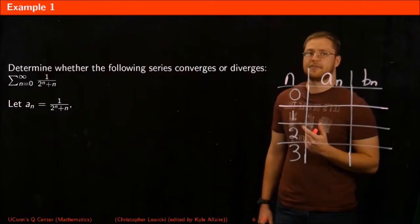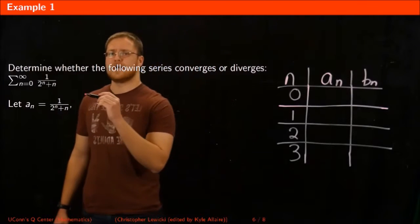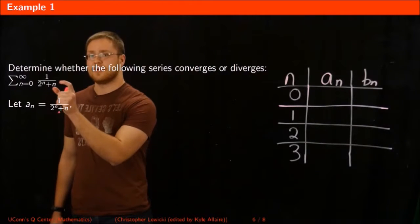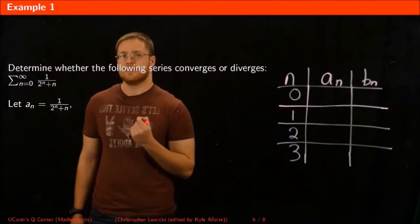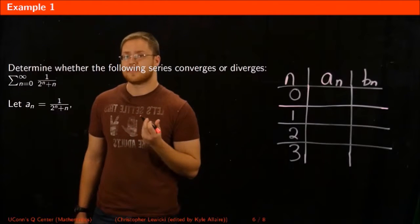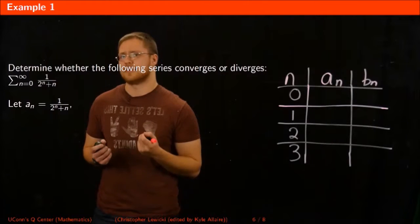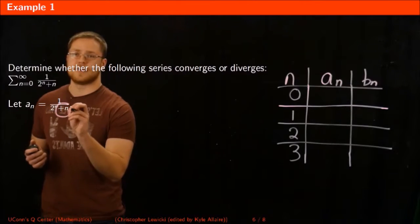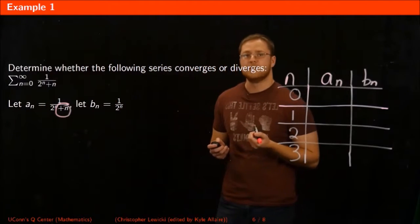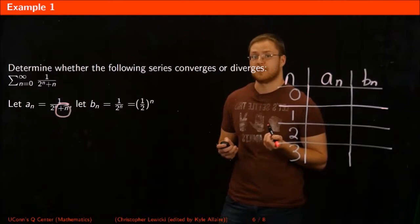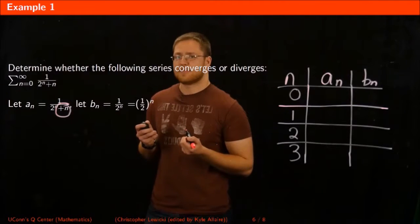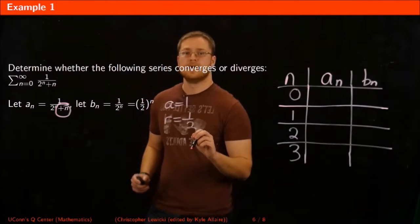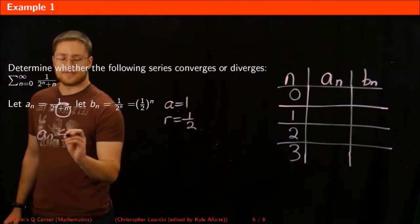Now let's work through some examples to figure out if a series converges or diverges. The first thing you should do when using the comparison test is take the sequence you're given and set it equal to An. Your second step is to find a simplified version of the sequence and set that as your Bn — something you can easily tell converges or diverges. In this example, I'm thinking: what if I get rid of the plus N in the denominator? Then Bn becomes 1 divided by 2 raised to N, which I can rewrite as (1/2)^N — a geometric series with A=1 and R=1/2. I need to prove that An ≤ Bn.